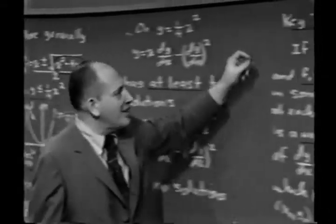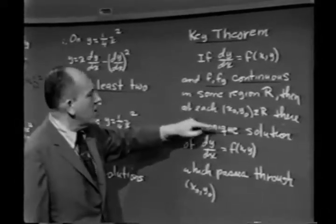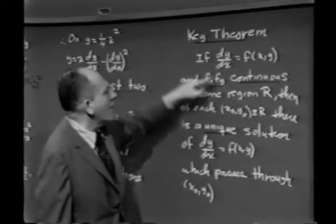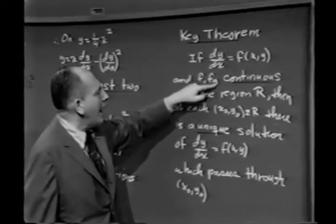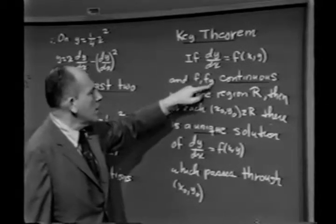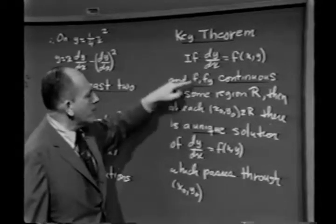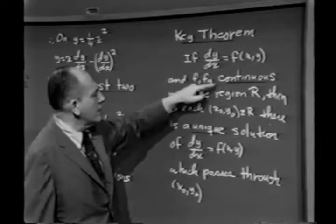Because notice that our key theorem says that the solution will be unique only in that region R where f and f sub y are continuous. Notice that below the parabola, f and f sub y were continuous.